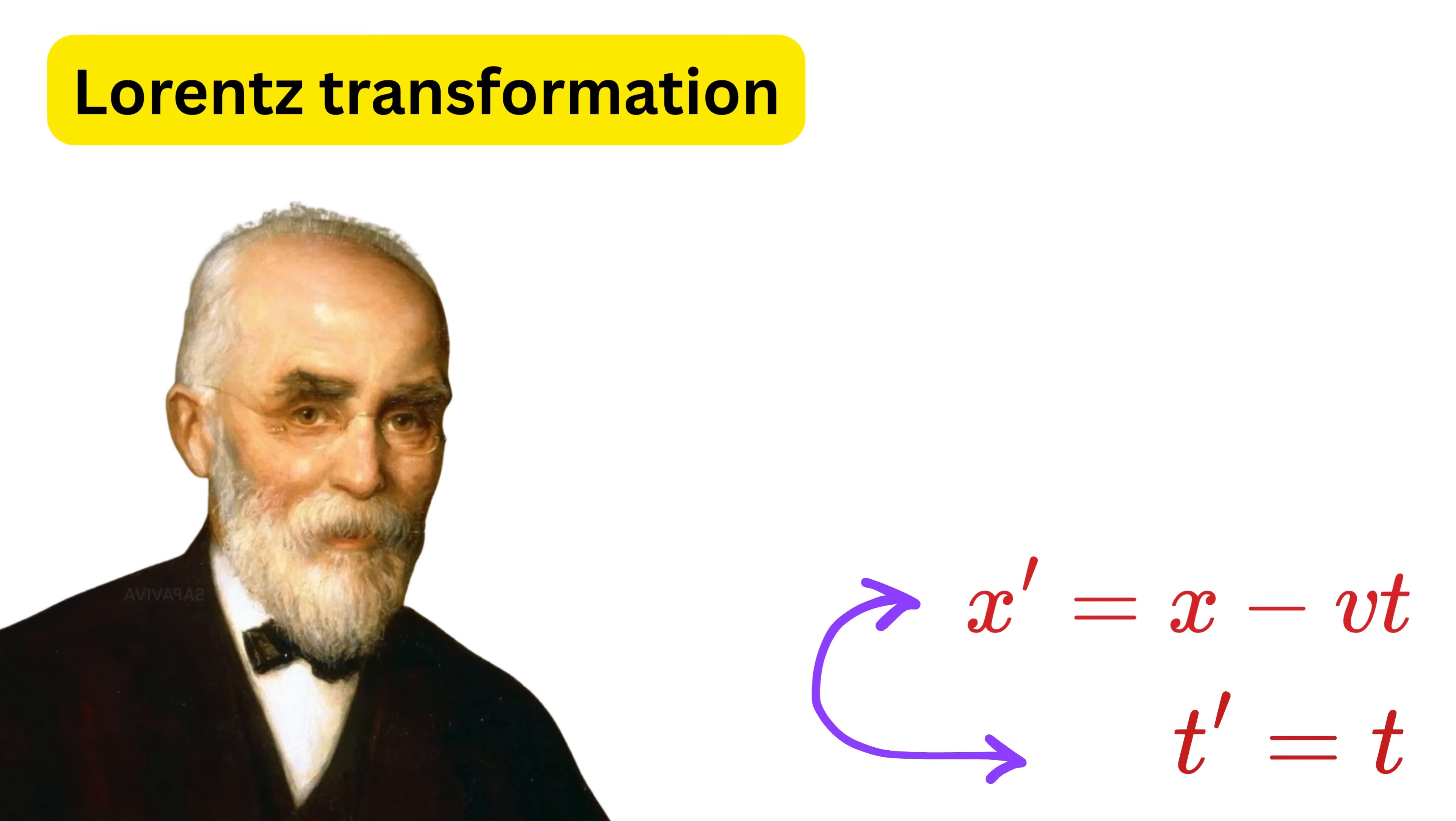Einstein solved this puzzle by realizing that space and time are not separate and fixed, but they are deeply connected and they must adjust depending on how fast someone is moving. That's when the Lorentz transformation came into the picture.